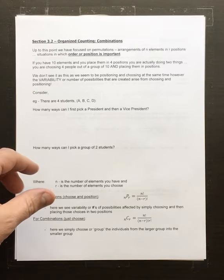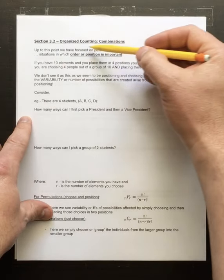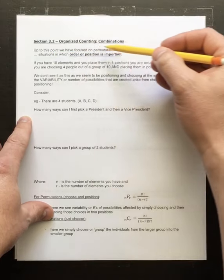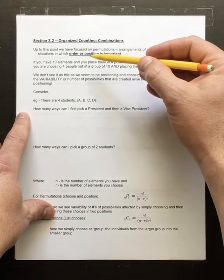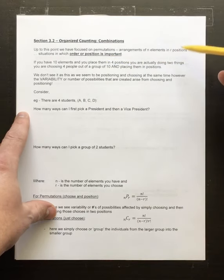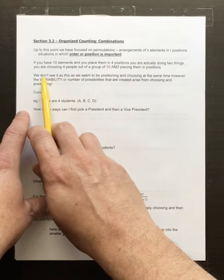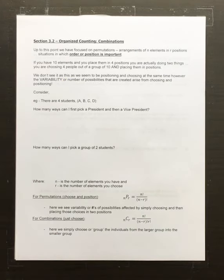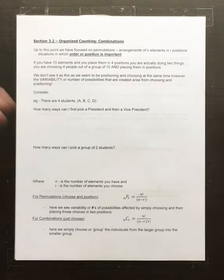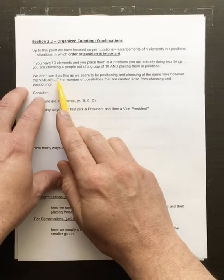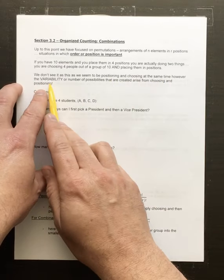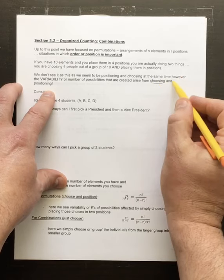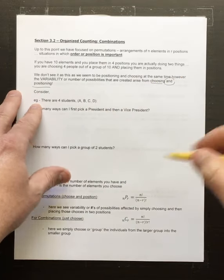Permutations are arrangements of n elements in r positions — situations where order or position is important. If you have 10 elements and place them in four positions, you're actually doing two things: first, choosing four people out of the 10, and then placing them in order. Choosing gives you variability because there are six people you don't choose, and putting them in order gives you variability too. That's really what a permutation is — the variability arises from both choosing and positioning.